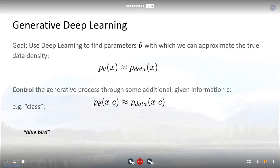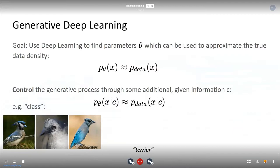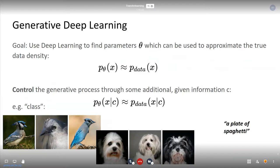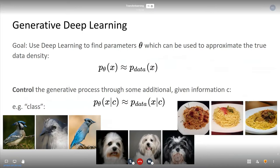The standard example for this is class-conditional image synthesis, where we control the synthesis process by some abstract label that we give to the model. For example, I could train a generative model on the ImageNet dataset and then tell it to synthesize images of a blue bird, or of a terrier, or of my favorite ImageNet class — a plate of spaghetti — and that's what we get. These are actually samples from the model that we trained.